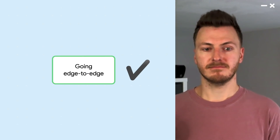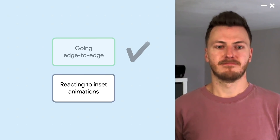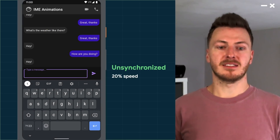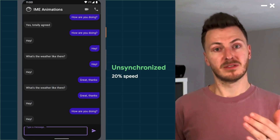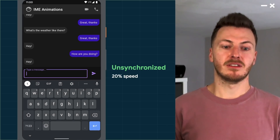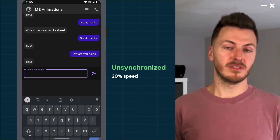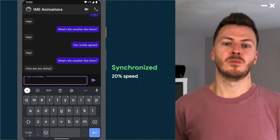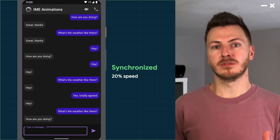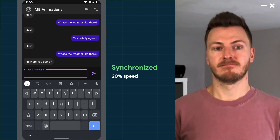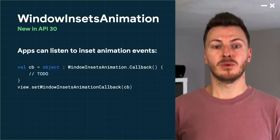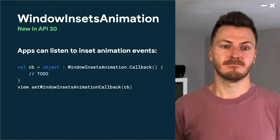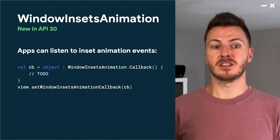Now we move on to inset animations. Here we have a fake chat app. When the user clicks on the text input to type a reply, the keyboard animates into place, but the app snaps between the two states. This is the behavior you've seen on your devices for a while — just slowed down so it's more obvious. Now let's look at what's possible in Android 11. When the user clicks on the text input, the app moves with the keyboard to create a much more seamless experience. The API which powers this is the new WindowInsetsAnimation class, which covers an animation involving insets. Apps can listen to animation events through the callback class, which can be set on any view.